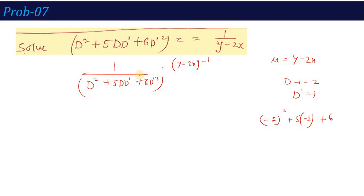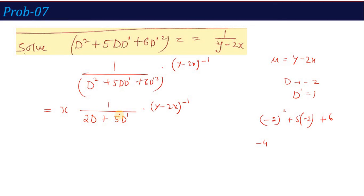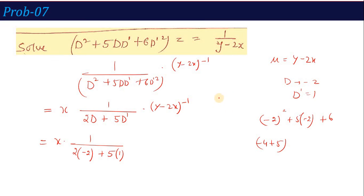Since the denominator is 0, we differentiate with respect to D (highest power D²) to get 2D + 5D', then multiply by x. Substituting D=-2, D'=1: 2(-2) + 5(1) = -4 + 5 = 1, which is not zero. So this step gives PI = x × [1/(1)] × (y-2x)⁻¹, integrating (y-2x)⁻¹ once.